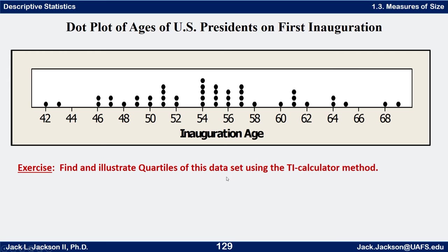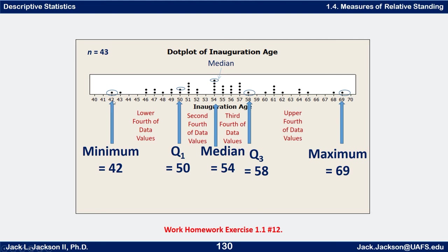Using the TI calculator method, here's the dot plot for the ages of U.S. presidents at their first inauguration, covering all presidents from Washington through Obama. Find the quartiles and illustrate them on the dot plot. The minimum is 42, the maximum is 69. For the median, there are 43 data points, so (43+1)/2 = 22, meaning the 22nd value from the bottom is the median.